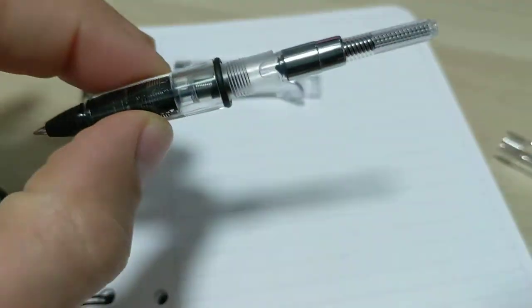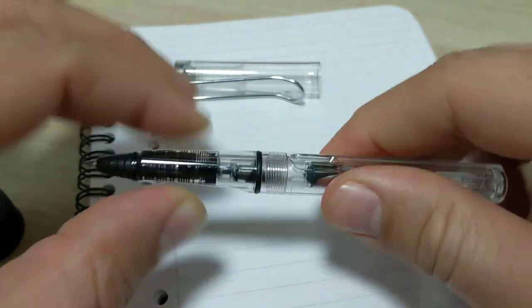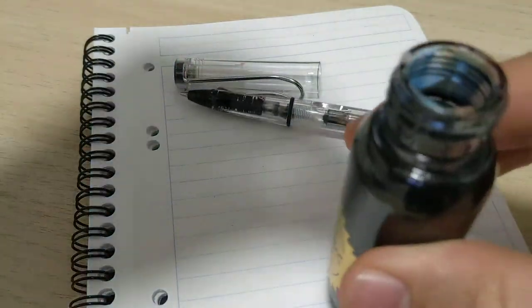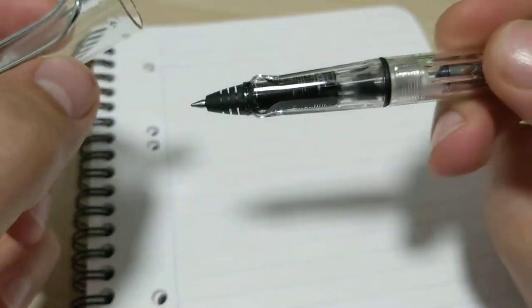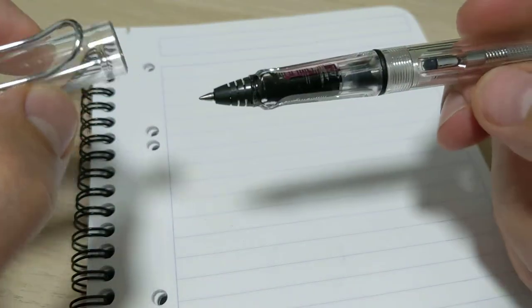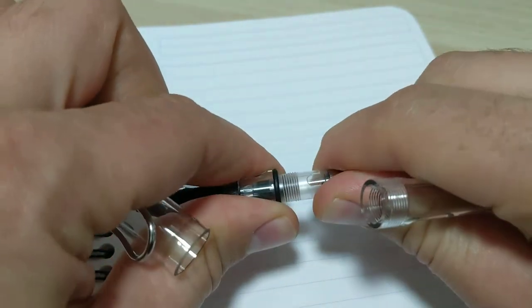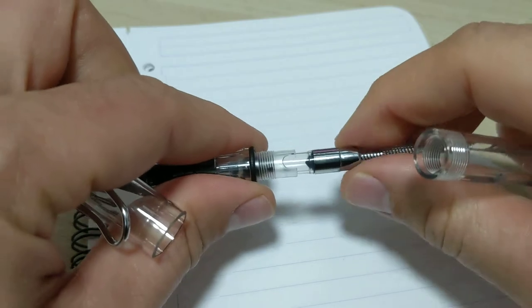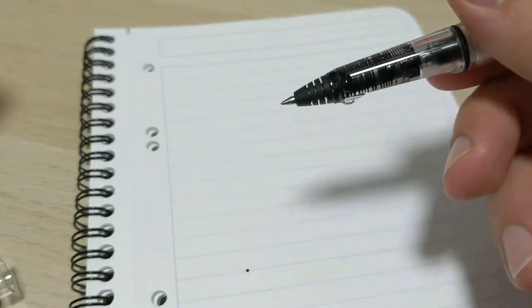I think I got some in there, let's give it a wipe and give it a go. Here it is, the most important part is the lid of this thing. Obviously it's clear so it's a demonstrator. Let's see how much ink, I should have done it twice but we got a teeny bit in there.